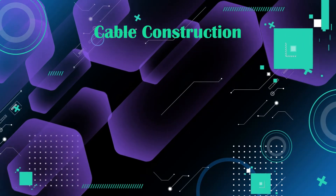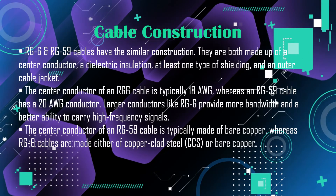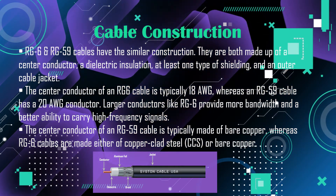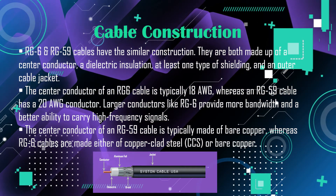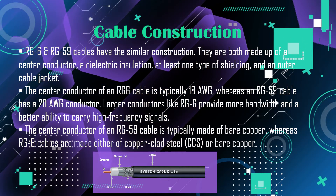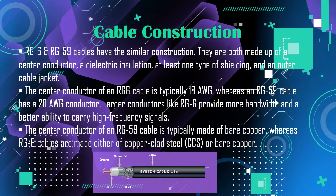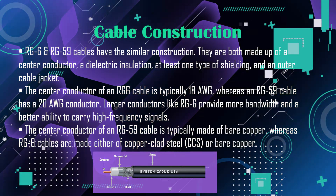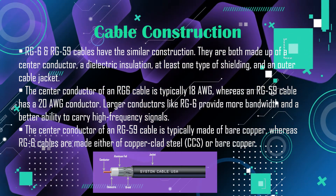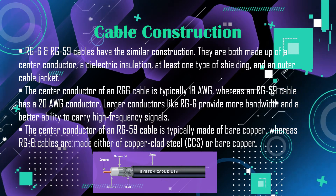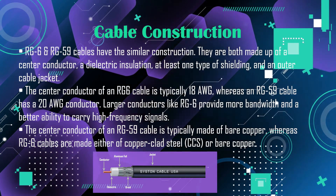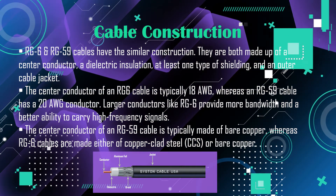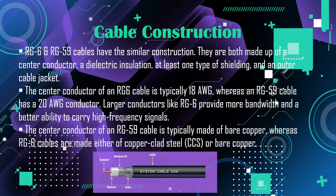Cable construction: RG6 and RG59 cables have similar construction. They are both made up of a center conductor, a dielectric insulation, at least one type of shielding, and an outer cable jacket. The center conductor of an RG6 cable is typically 18 gauge, whereas an RG59 cable has a 20 gauge conductor.